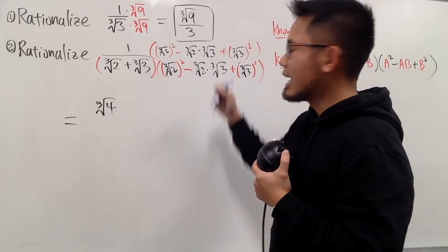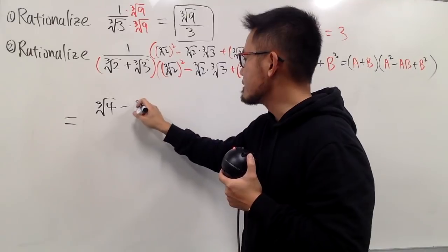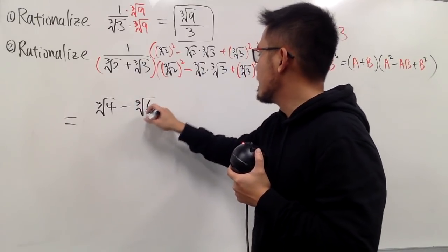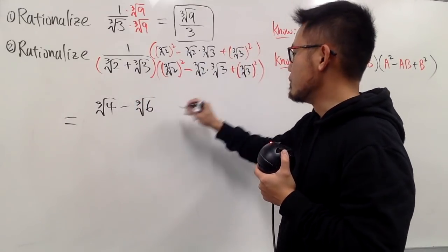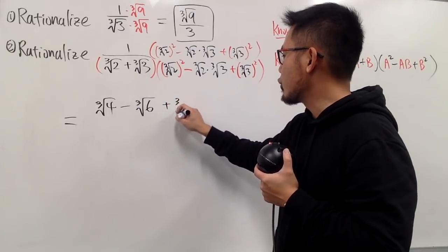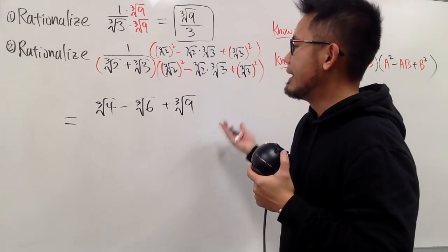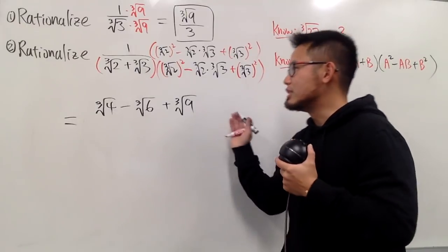And then this times that, because they have the same radical, I can just write down minus the cube root of 6. And this right here, we square the 3 pretty much. So, we can say we add the cube root of 9. And we cannot combine anything on top. We'll just leave it as how it is.